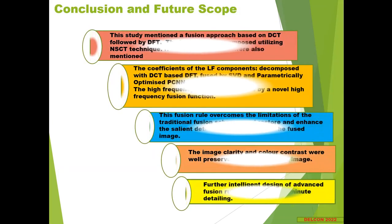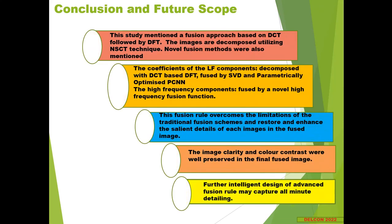To summarize, we have proposed a new fusion approach based on DCT followed by DFT and using parametrically optimized PCNN for fusion. The source images are decomposed using NSCT, and we introduced a novel algorithm to fuse high frequency components. The low frequency components are decomposed by DCT followed by DFT, then fused by SVD and parametrically optimized PCNN. This overcomes limitations of traditional methods such as lacking visual clarity and inability to combine relevant characteristics from source images, demonstrating effectiveness both subjectively and objectively. Further, more sophisticated fusion rules may capture more minute detail and neighborhood effects while removing artifacts, and the approach can be extended from two images to multiple images.